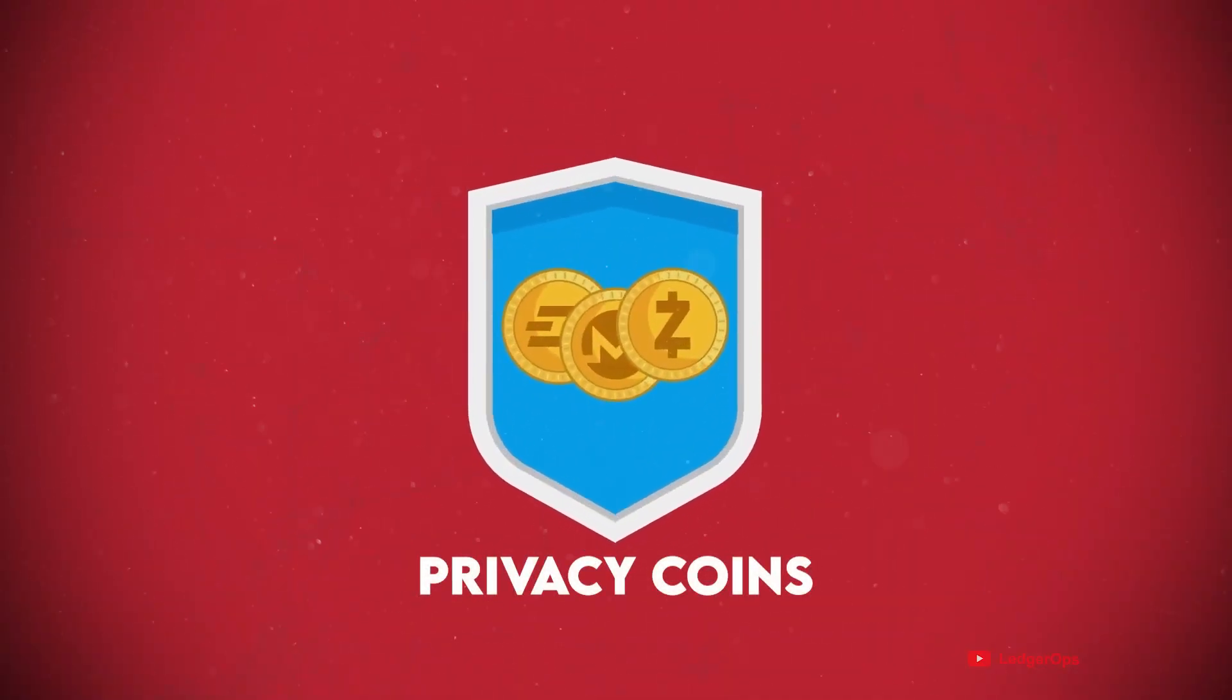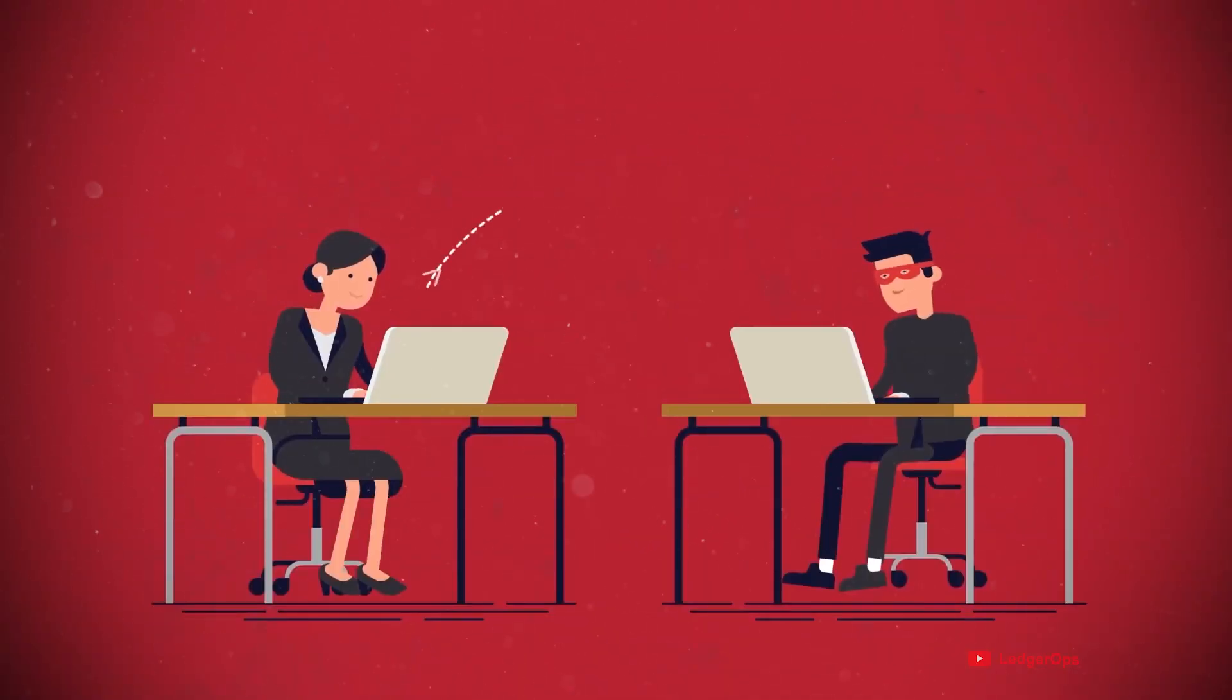Privacy coins were designed to keep user transactions private, leaving no evidence of how money flows across the network. This makes transaction monitoring challenging and can be used to conceal financial activity. But what makes privacy coins so unique?